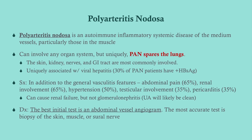Polyarteritis nodosa primarily affects the medium vessels. Because pulmonary vessels are tiny, PAN spares the lungs — this is a key distinguishing feature. It can affect any other organ system; most commonly the skin, kidneys, nerves, and GI tract. It is uniquely associated with viral hepatitis, particularly hepatitis B. If you confirm or suspect PAN, always get hepatitis panels. Abdominal pain is prominent given the many medium-sized vessels in the gut.